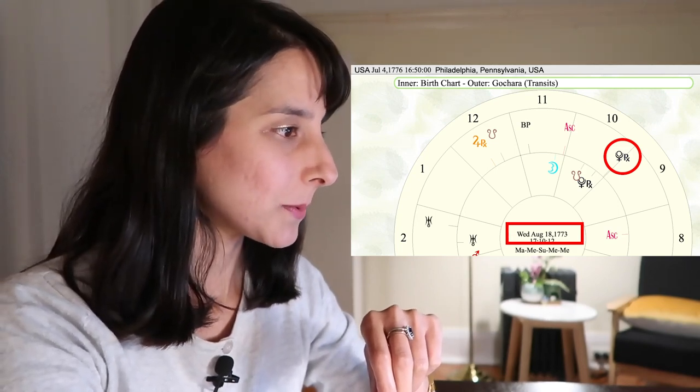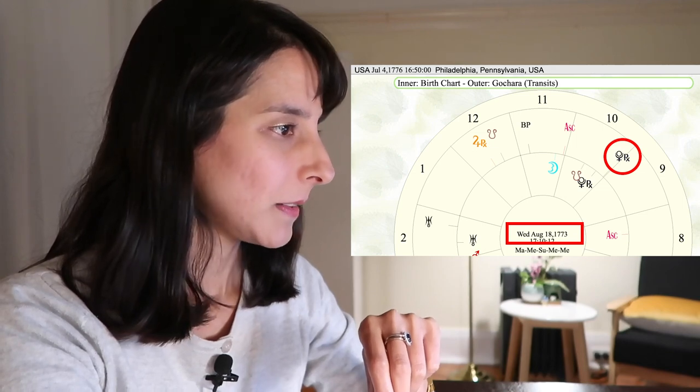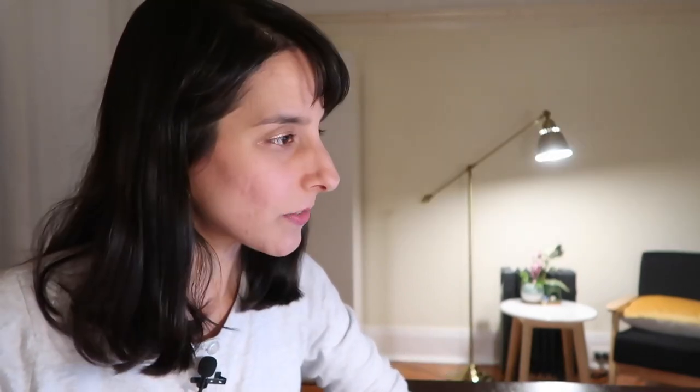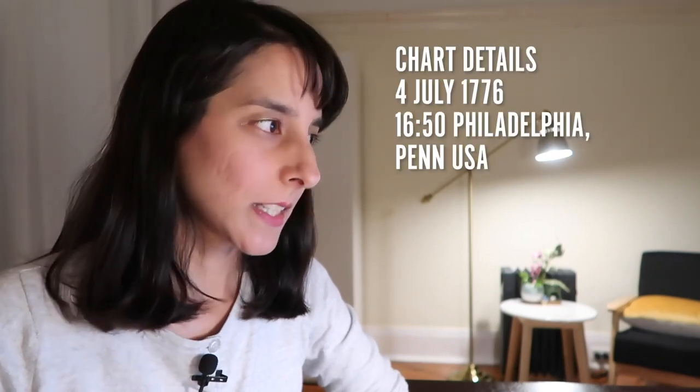I'll put diagrams up as I go along so you can see what I see. I wanted to see when was the last time that Pluto was in this neighborhood of crossing over from Sagittarius to Capricorn. It's really interesting — the last time Pluto was here was 1772, around April 1772 to 1773. The date I've got for the chart is United States of America, July 4th, 1776.